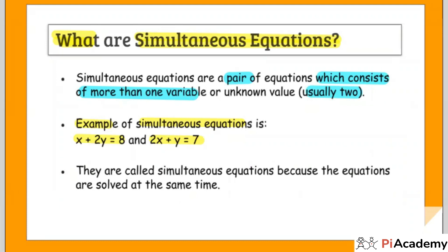The next question is: why do we call it simultaneous equation? The answer is that the equations are solved at the same time. It means if you solve for the value of x, then at the same time you may get the value of y as well.